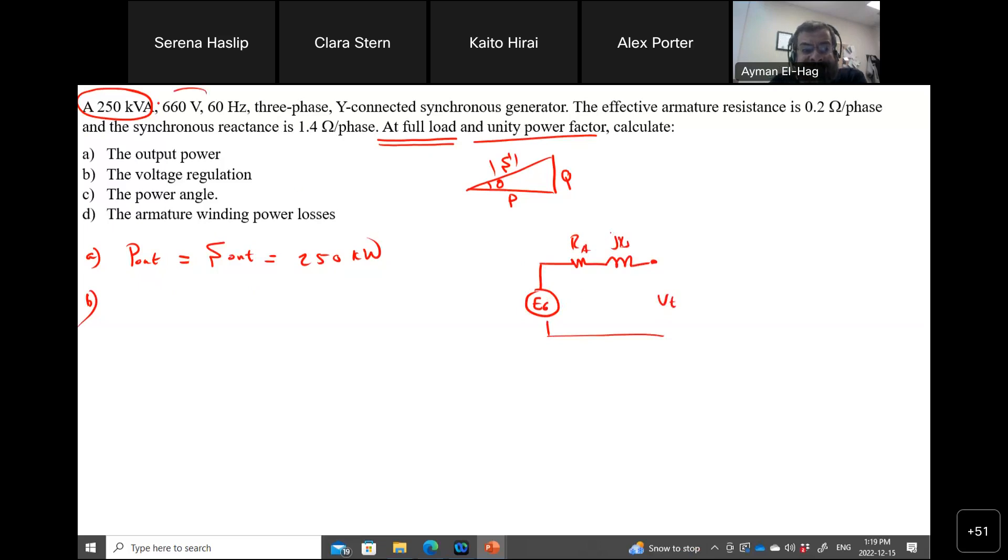Now the 660 volt is your terminal voltage. This is the rated value of your generator at the terminal. Now this is a Y-connected generator. This is a single phase. So for Y connection,